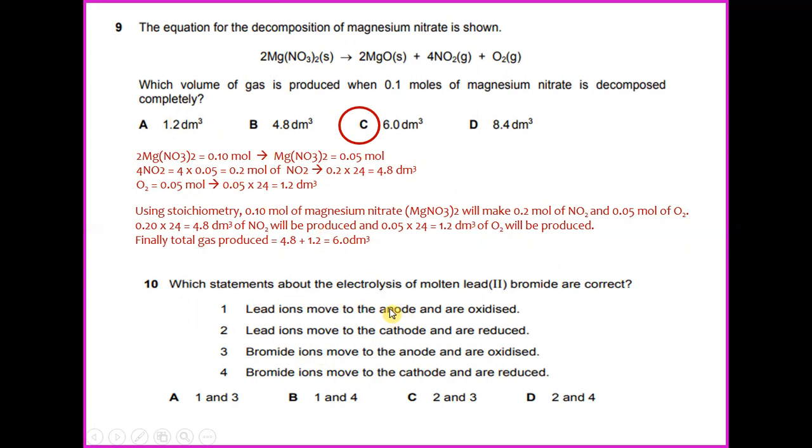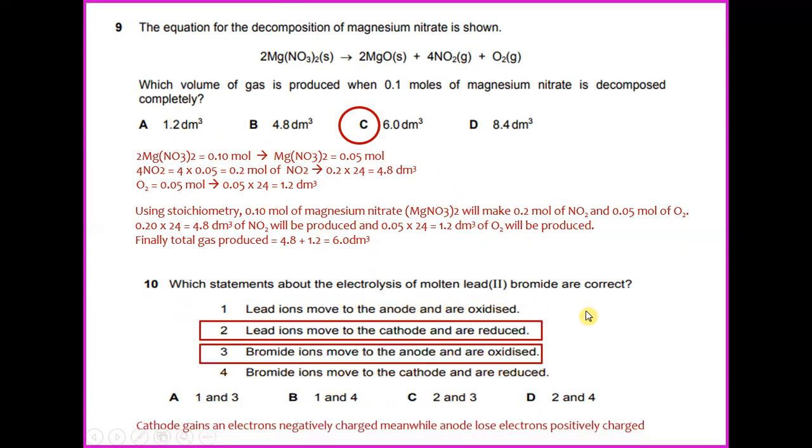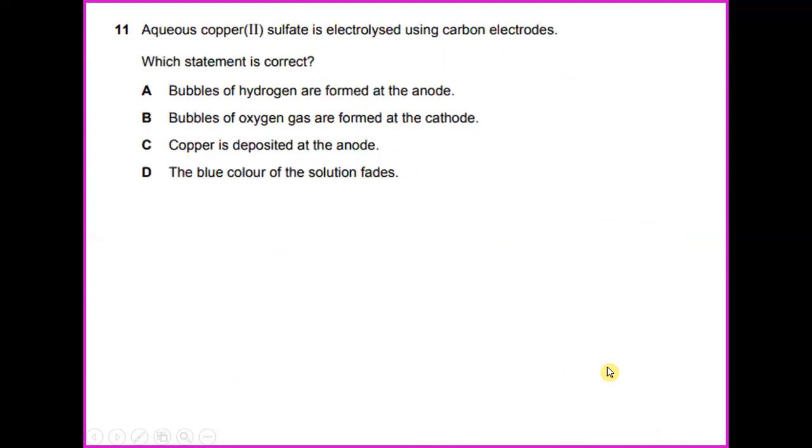Which statement about the electrolysis of molten lead(II) bromide are correct? In this case, cathode gains an electron negatively charged. Meanwhile, anode loses electron positively charged. So lead ions move to the cathode and are reduced. And bromide ions move to the anode and are oxidized. So the answer for this question would be C, 2 and 3.